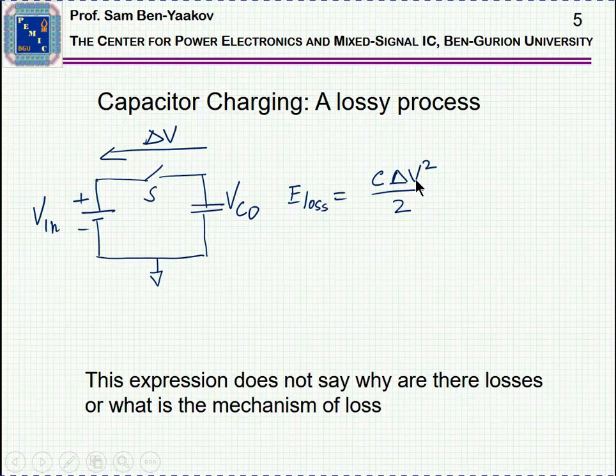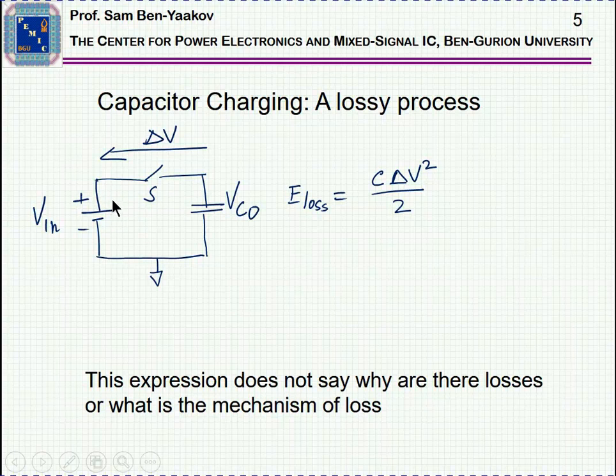Now, this delta V doesn't tell much. It doesn't say why are there any losses, and what's the reason for the losses, just for the mere fact that there is a delta V between the input and the capacitor, why would it entail a loss?